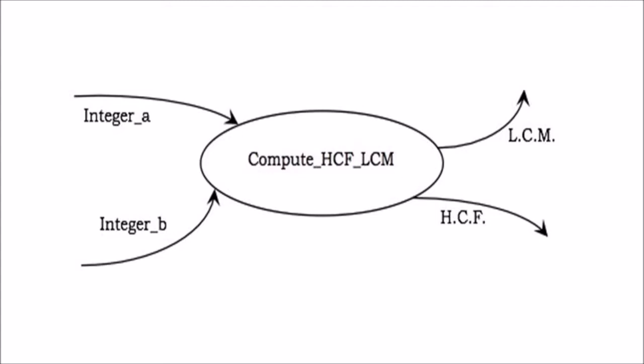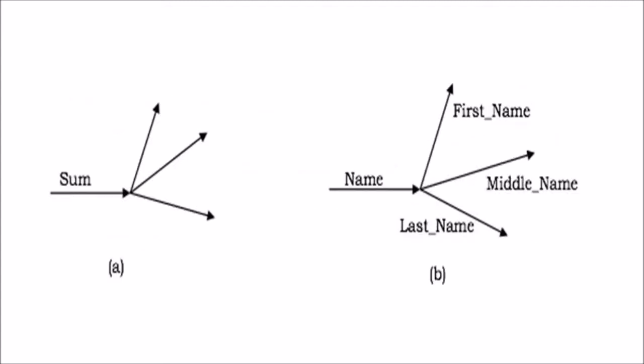Sometimes the data flow may be forked. The first condition is when the output value is sent to several places, as shown in this figure — here the output arrows are unlabeled as they denote the same value. In the second case, the data flow contains an aggregative value and each of the components is sent to different places, as shown in this figure — here each of the forked components are labeled.